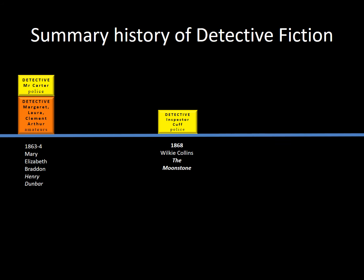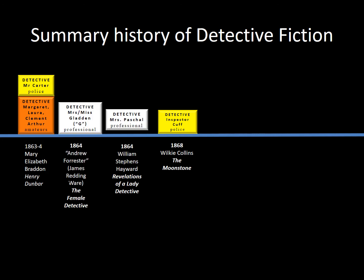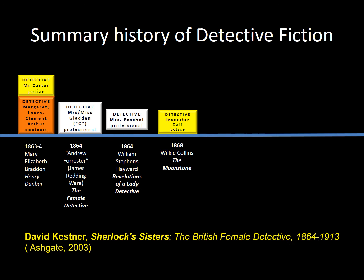I chose Henry Dunbar for several reasons. Not only does it precede The Moonstone by several years, but it has various investigators — various kinds of detectives, both male and female, amateur and professional. It also enables me to mention the first two professional women detectives in fiction, which both came out the same year as Henry Dunbar was published in serial form. There's no time to explore these here, but if anyone's interested, I thoroughly recommend the volume Sherlock Sisters — an entertaining and very easy read, with copies in the library.